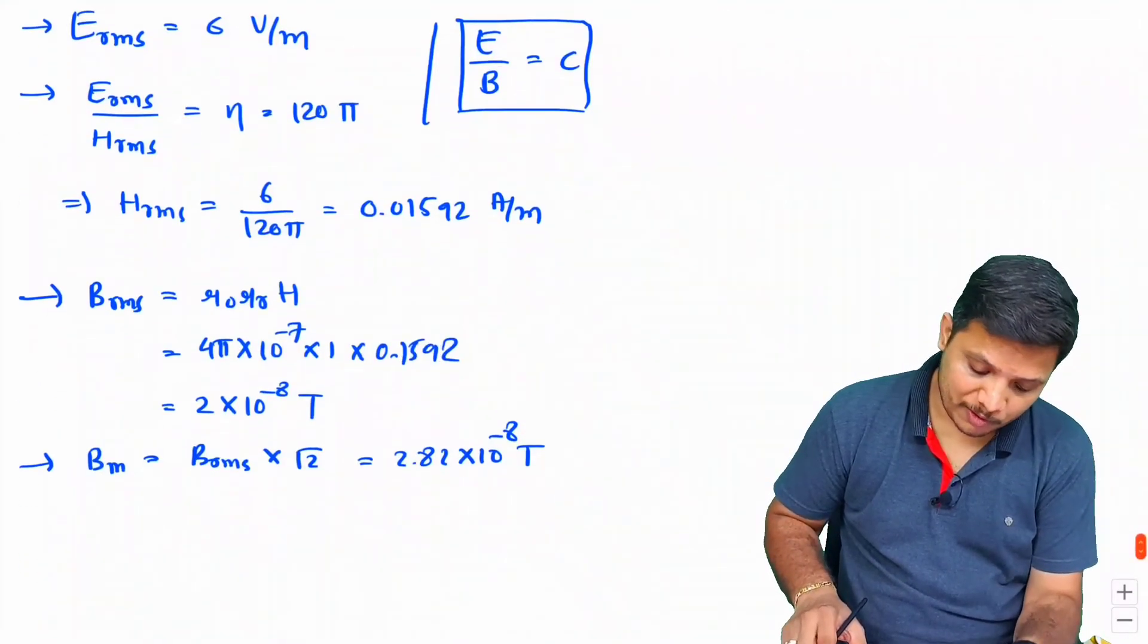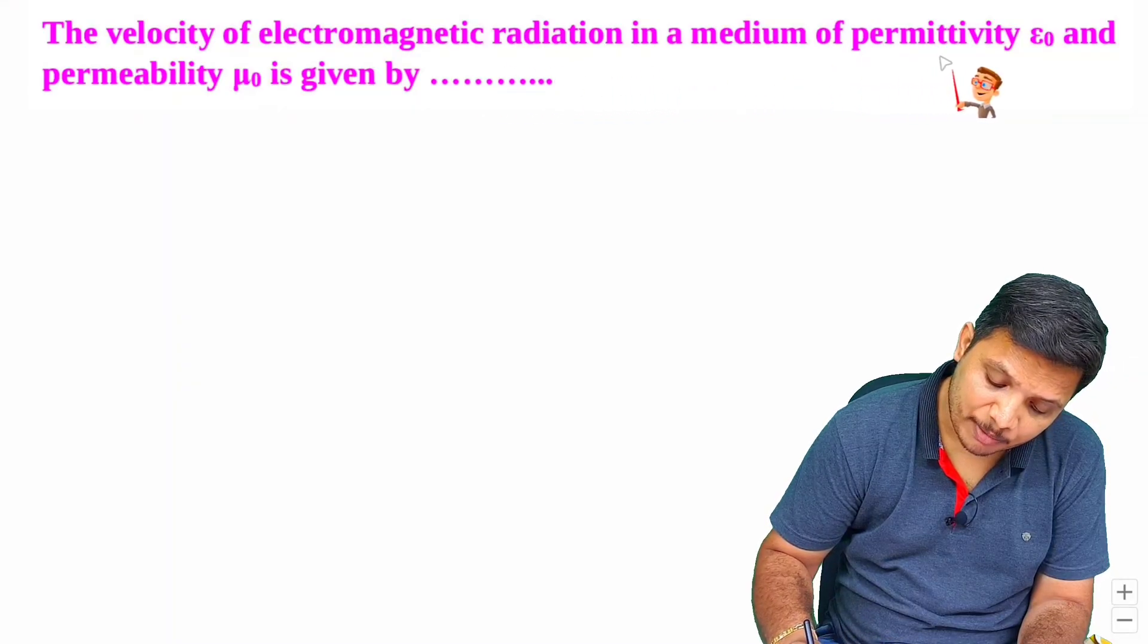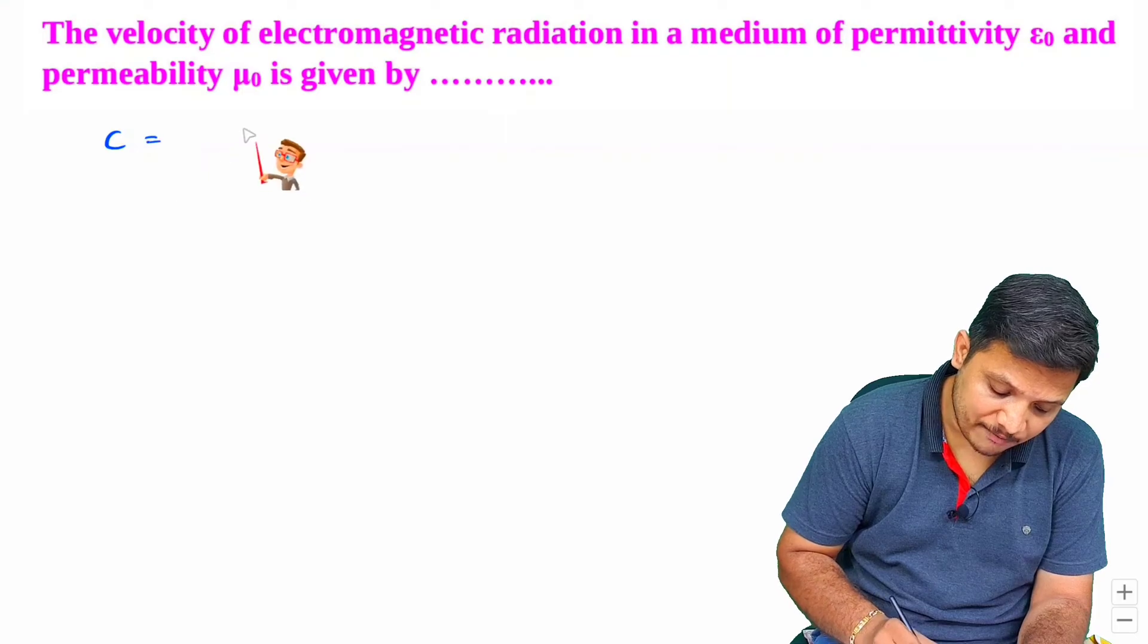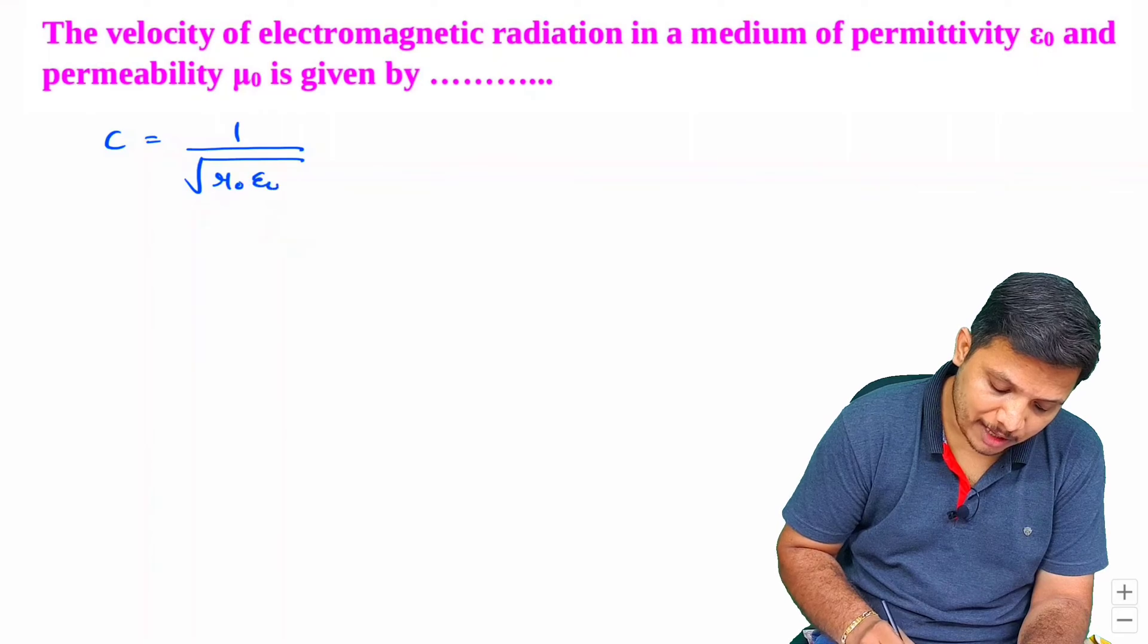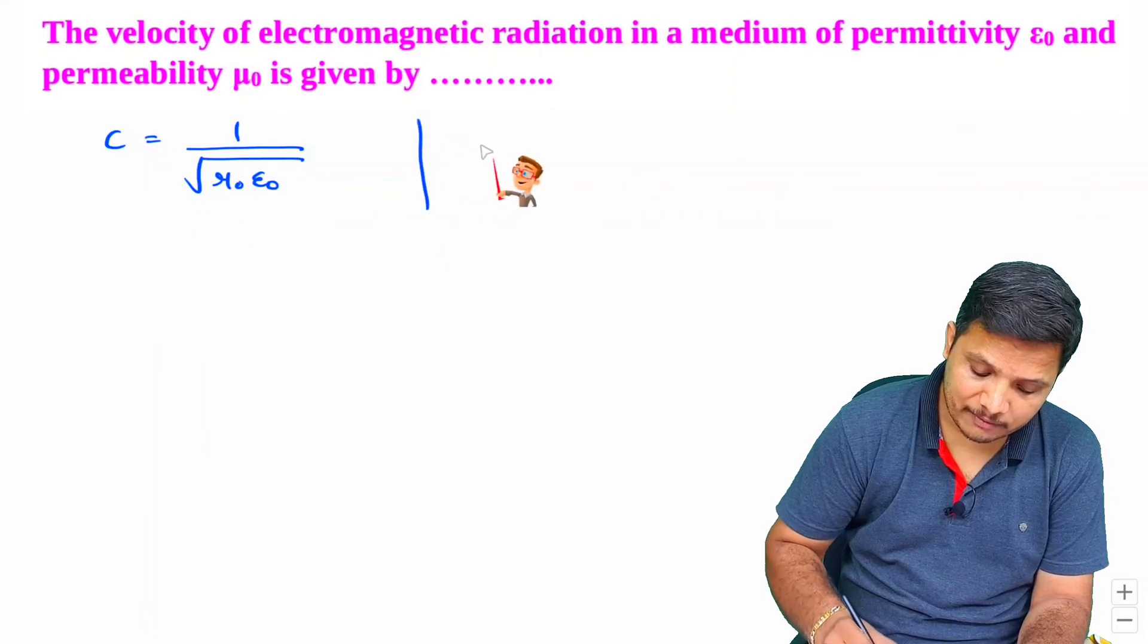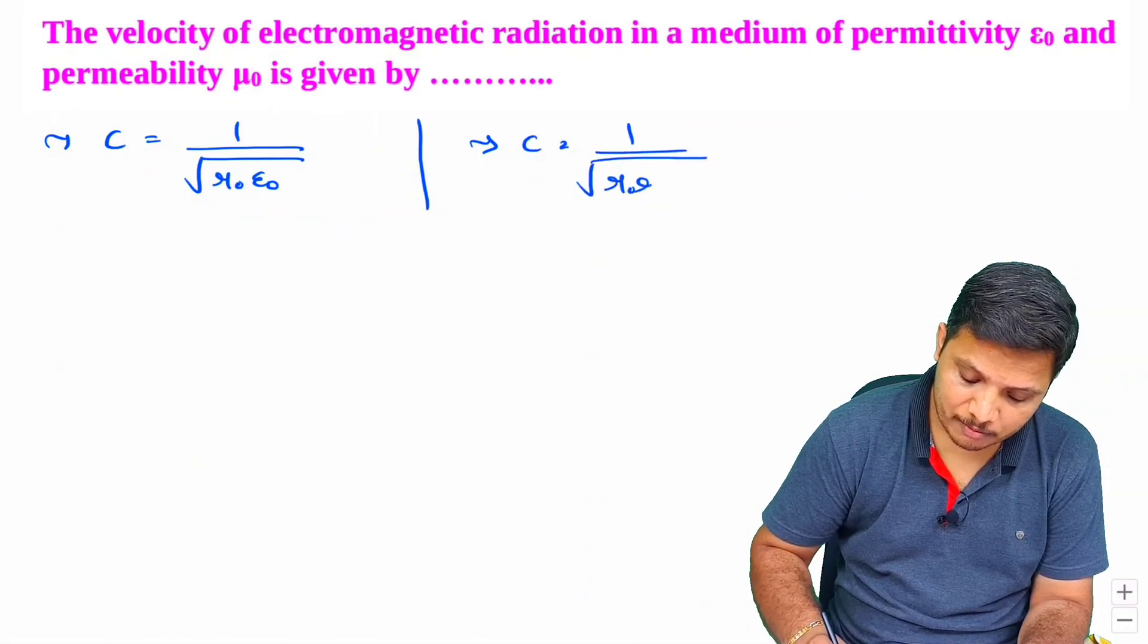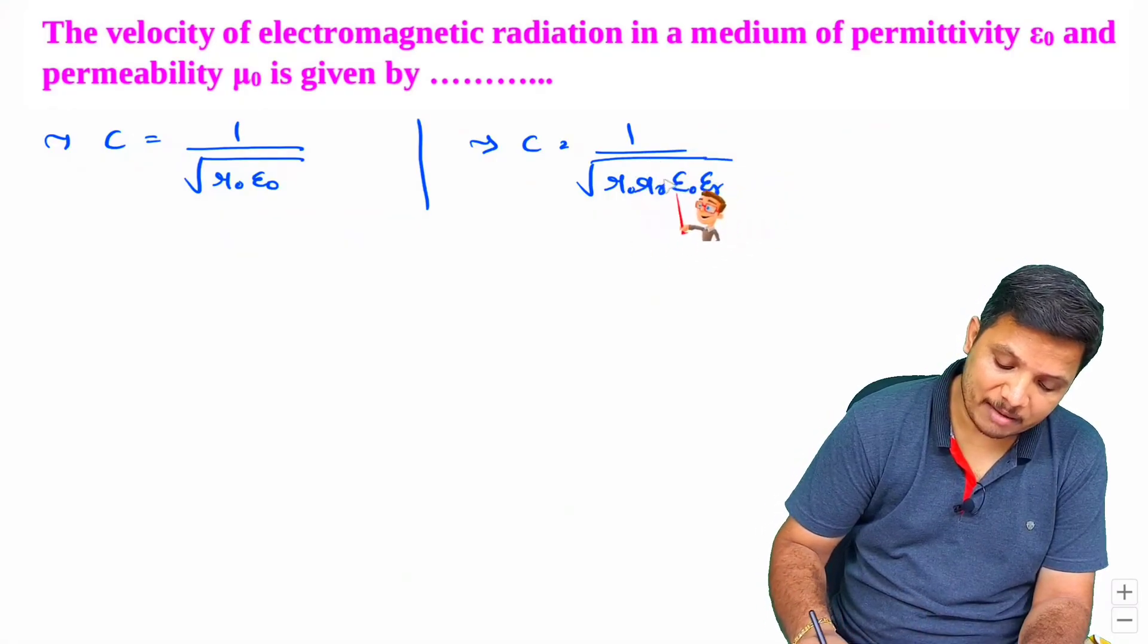Let us have one more question. So next question is: the velocity of electromagnetic radiation in medium of permittivity ε₀ and permeability μ₀ is given by how much? See velocity of EM wave that is given by 1 by square root of μ₀ε₀ in free space. And if it is there with medium, then for medium, it is given by: c equals 1 by square root of μ₀μᵣε₀εᵣ. For medium, it is like this.